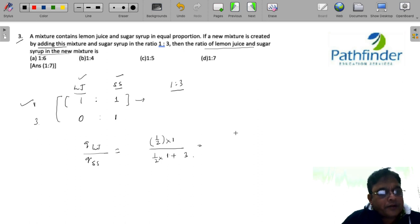So what do you get? 1 by 2 upon 3.5, which is nothing but 1 as to 7.